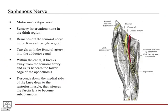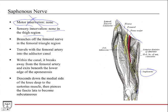The saphenous nerve is strictly a sensory nerve — no motor innervation anywhere in the lower extremity. Sensory-wise, it doesn't do the thigh region; it's more the medial aspect of the leg and ankle region. It's a branch off the femoral nerve. Here's the saphenous — here's your inguinal ligament, and once the femoral nerve comes out from under it, it sprays into branches to innervate muscles, gives off the anterior cutaneous branch, and then gives off the saphenous nerve. The saphenous branches off the femoral nerve in the femoral triangle region.